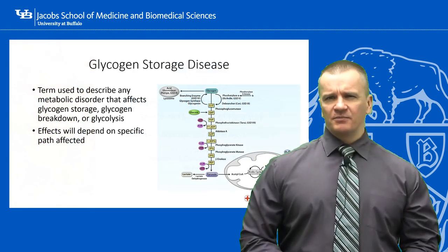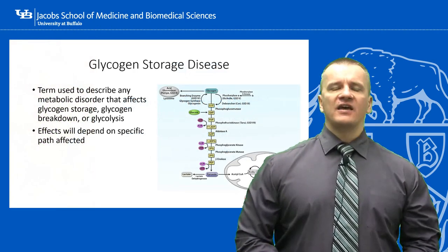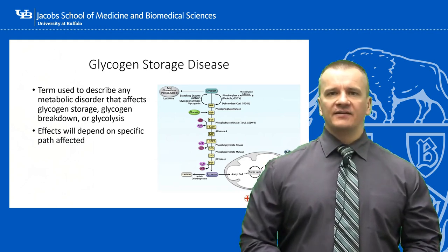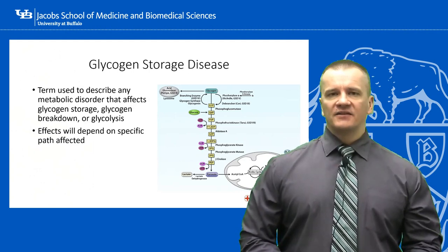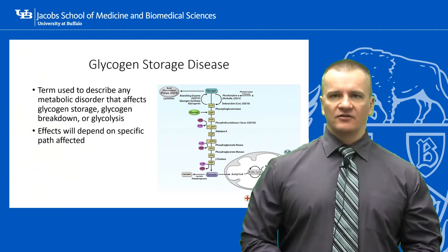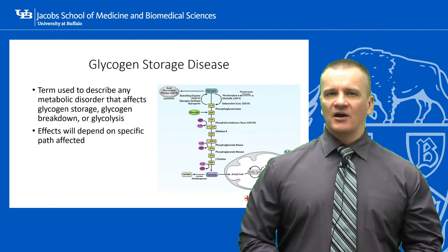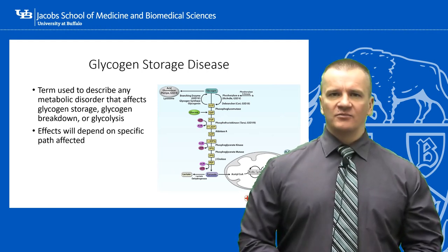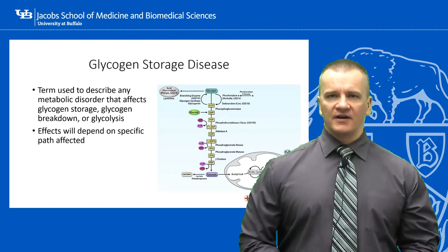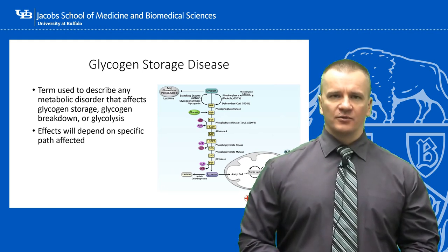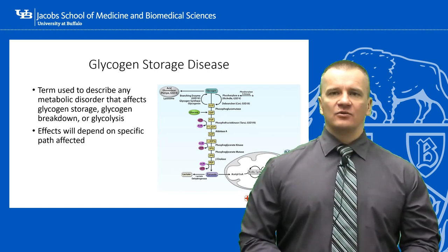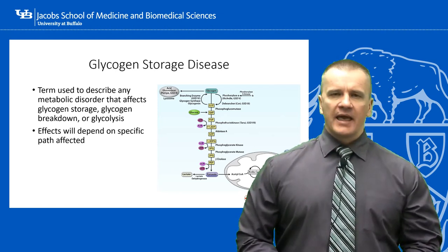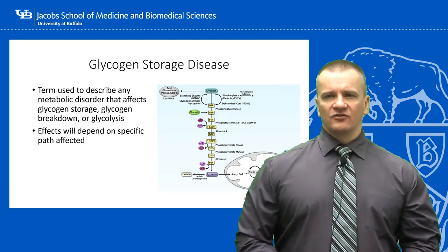The etymology of the term is a bit unfortunate. The first cases to be characterized were related to errors in the enzymes involved in glycogen synthesis and breakdown, and at the time the name was an accurate descriptor. Since then, additional gene mutations to enzymes involved in glycolysis have also been identified and included within this group, though the name has not been updated. So any error in an enzyme related to glycogen synthesis, glycogen breakdown, and glycolysis is known as a glycogen storage disease.